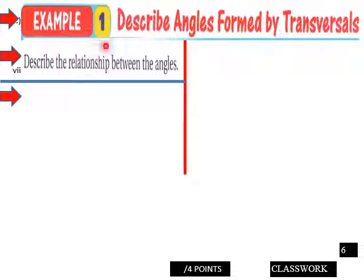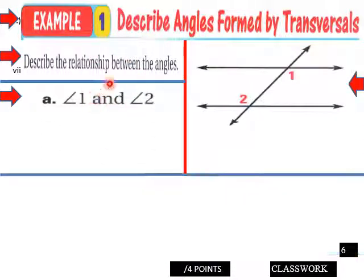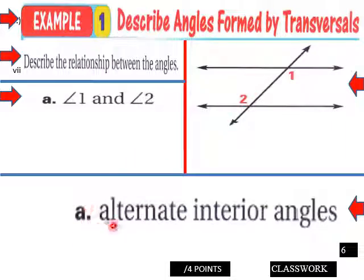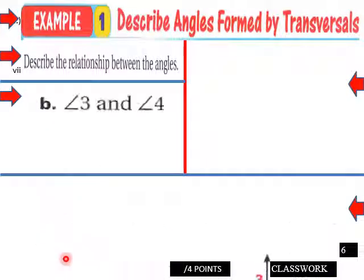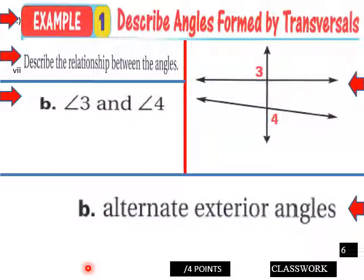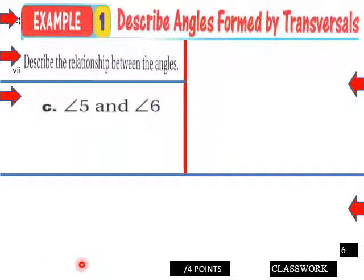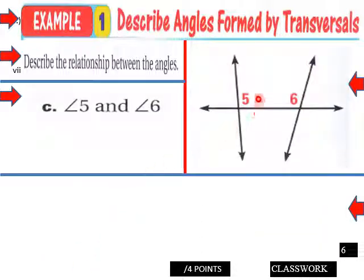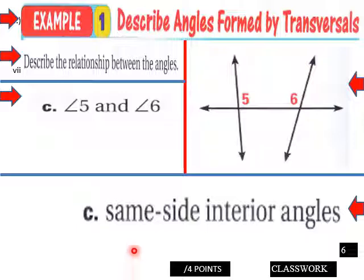Example 1: Describe angles formed by transversals. We have angle 1 and angle 2 in the diagram. Describe the relationship between the angles. Angles 1 and 2 are alternate interior angles — they are on alternate sides of the transversal on the interior side of the two lines. Angles 3 and 4 are alternate exterior angles, on the exterior side of the two lines. Angles 5 and 6 are same side interior angles.